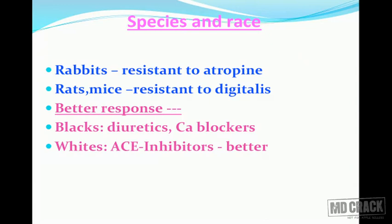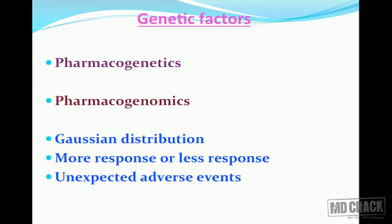Next are species and race. Rabbits are known to be resistant to atropine, and rats and mice are resistant to digitalis. Regarding human races, there is a better response in blacks with diuretics and calcium channel blockers, whereas in whites, angiotensin converting enzyme inhibitors are known to produce a better response.